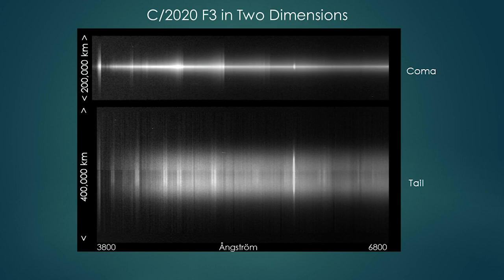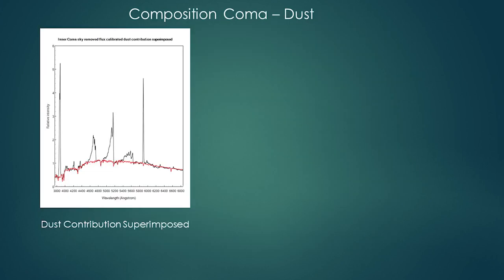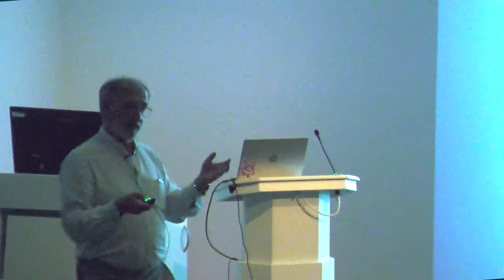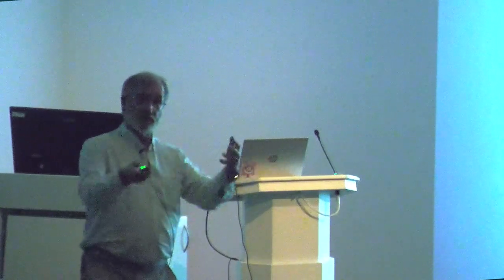How do we process these to extract all the information? The first thing we do is take the spectrum of the inner coma part and produce a conventional spectrum. To do that, you have to remove the sky background, calibrate in wavelength, and calibrate in relative flux. To do that you use a standard star as a reference to correct for the sensitivity curve of the instrument and also for atmospheric extinction.